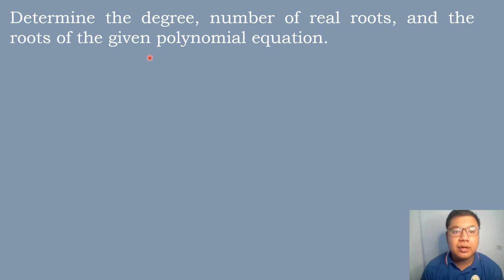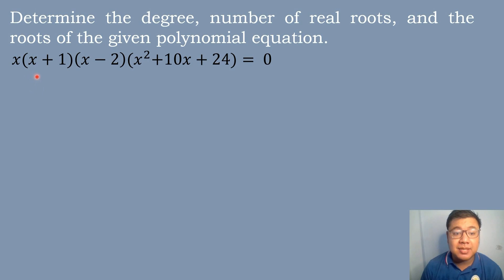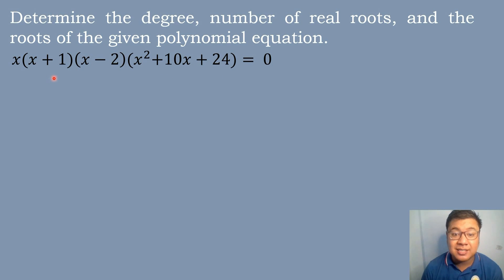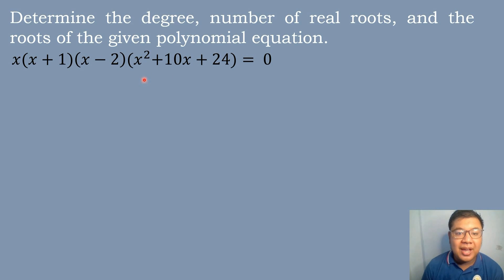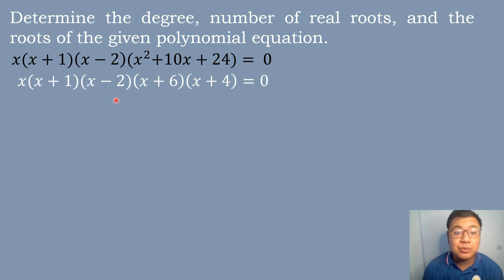Let's have our last example. Determine the degree of polynomial, number of real roots, and the roots of: x(x + 1)(x − 2)(x² + 10x + 24) = 0. Since it has a quadratic expression, we factor x² + 10x + 24 by finding two numbers with a sum of 10 and a product of 24 — that is 6 and 4. So the factors are (x + 4)(x + 6), giving us x(x + 1)(x − 2)(x + 6)(x + 4) = 0.